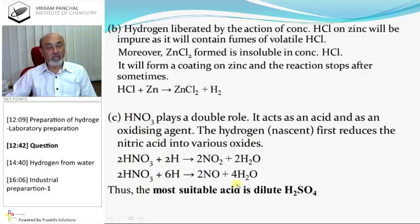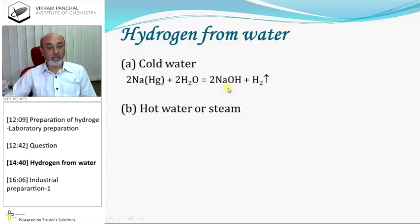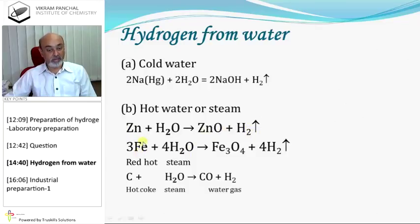The most suitable acid for production of hydrogen in the laboratory is dilute sulfuric acid. Hydrogen from water: when sodium amalgam is added to cold water, hydrogen gas is obtained. When zinc is treated with steam, zinc oxide and hydrogen gas are produced. When red hot iron and steam are mixed, hydrogen gas is produced. Hot coke reacts with steam and produces water gas.